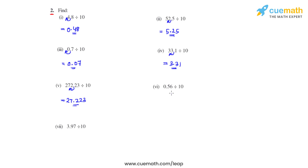In the sixth bit, we have 0.56 divided by 10. The decimal will move one place towards the right, and so the answer will be 0.056.